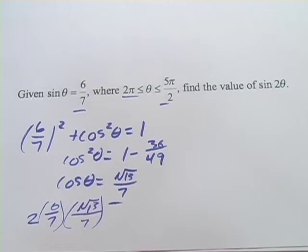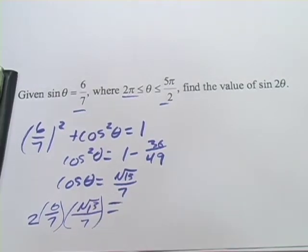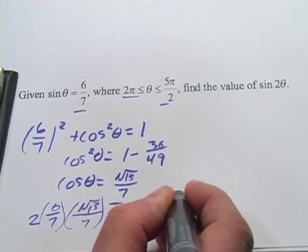And then let's see we'll go ahead and figure this out as a decimal. So that's going to be 2 times 6 times square root of 13 divided by 49. And I get 0.883.